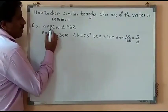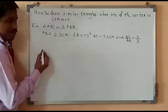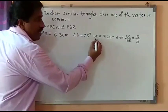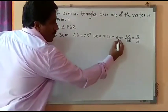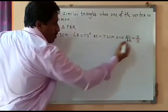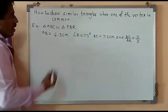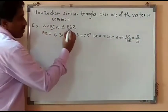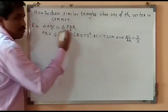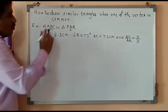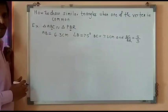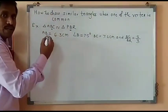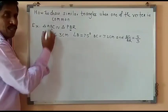Example: Triangle ABC is similar to triangle PBR. AB is 6.3 cm, angle B is 75 degrees, BC is 7.1 cm, and BC upon BR is 5 upon 3. Here, vertex B in triangle ABC and vertex B in triangle PBR is common. So, we have to draw similar triangles with a common vertex.